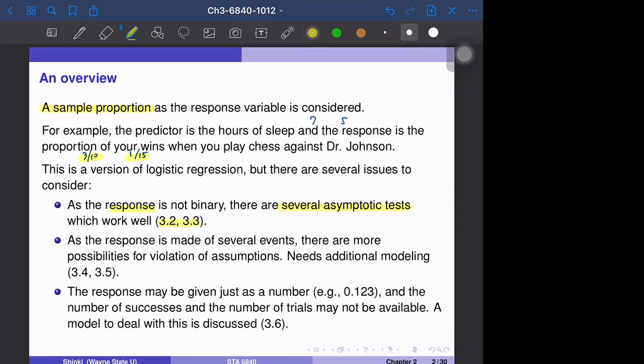And also some drawback. So as the response is made of several events, for example, 3 over 10 is made of 10 events. So there are more possibilities for violation of assumptions. For example, in the first few games, maybe you have the higher probability to win. But after a few games, you get tired and still Dr. Johnson is very active, then the probability may change.